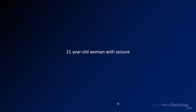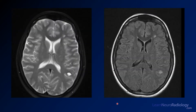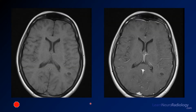Here we have a 21-year-old woman with a seizure. On T2 and FLAIR, there is a small cystic cortical or subcortical mass in the left cerebral hemisphere, about a centimeter or less, very well-defined. It doesn't suppress on FLAIR. On pre-contrast imaging there's not much going on, and on post-contrast there is little if any enhancement.